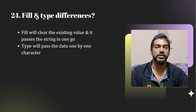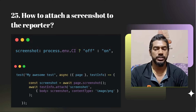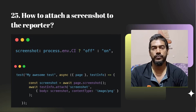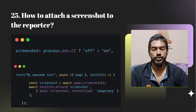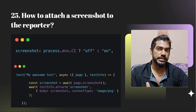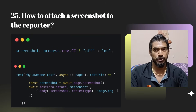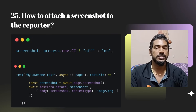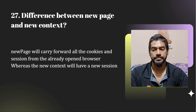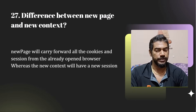How to attach a screenshot to the reporter? Two ways. In the configuration file you can set screenshot to 'on', 'only-on-failure', or 'only-on-retry'. But the config screenshot only captures the last screenshot when your test ends. If you want to take a screenshot at a specific point — for example right after login — use testInfo.attach(). To save a screenshot to a path, use page.screenshot() with the path option. Always use await — don't forget it.